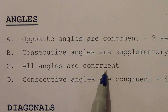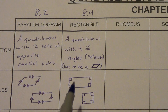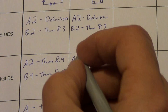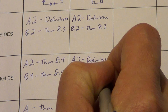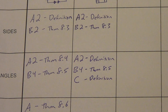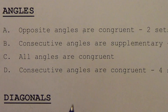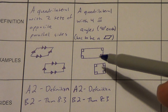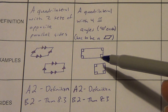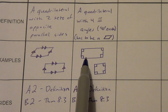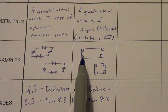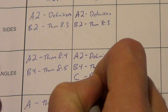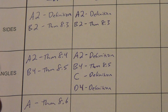All angles are congruent — yes, absolutely. That's the definition of a rectangle. Next: consecutive angles are congruent. We know they're all right angles, so any two consecutive angles are congruent — that gives us four sets. That also comes from the definition: if all angles are congruent, then definitely consecutive angles are congruent.